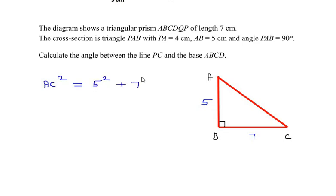So it becomes 5 squared plus 7 squared, so we can write AC equals square root of 5 squared plus 7 squared.